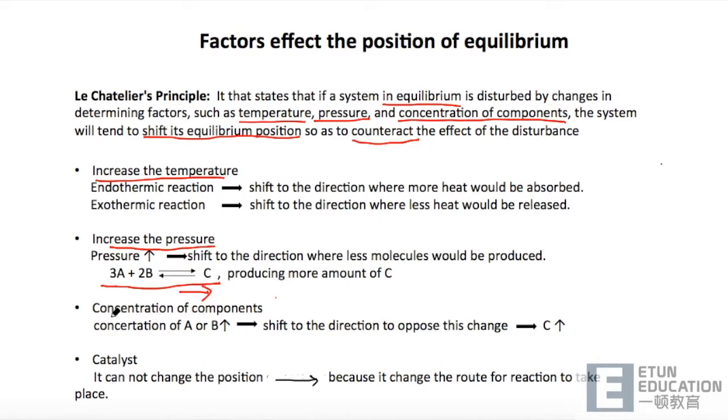好,最后我们再看一下 Concentration of the components 是怎样影响的。Concentration of components 可以说是最直接影响 equilibrium position 的一个因素了。我们还是用之前的这个例子,3A + 2B 生成了 one component C.